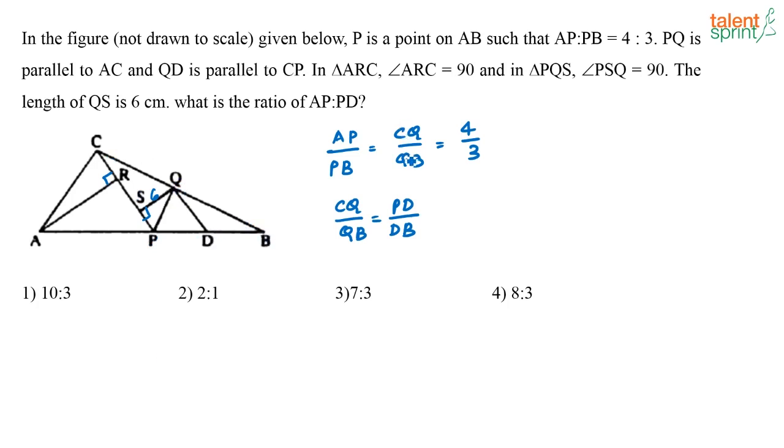Now, here you already know that CQ by QB is equal to 4 by 3, right? So here what will happen? This PD by DB, that is also equal to 4 by 3. Or what can I say? I can say that if PD is 4, this DB is going to be 3.